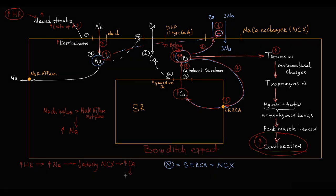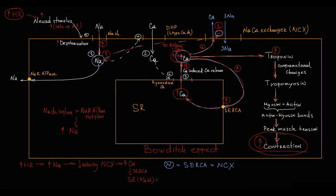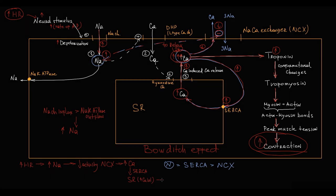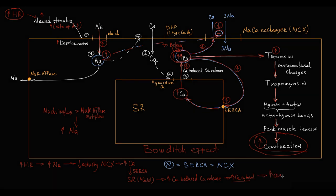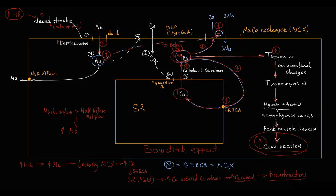In summary: increased heart rate → increased SERCA-mediated calcium accumulation in the sarcoplasmic reticulum → increased calcium-induced calcium release → higher cytosolic calcium concentration → higher force of contraction. This is the mechanism of the Bowditch effect, which, as we will discuss further, has very important clinical significance.